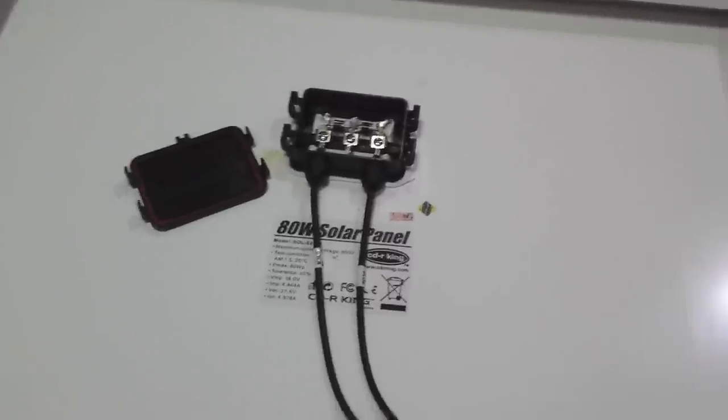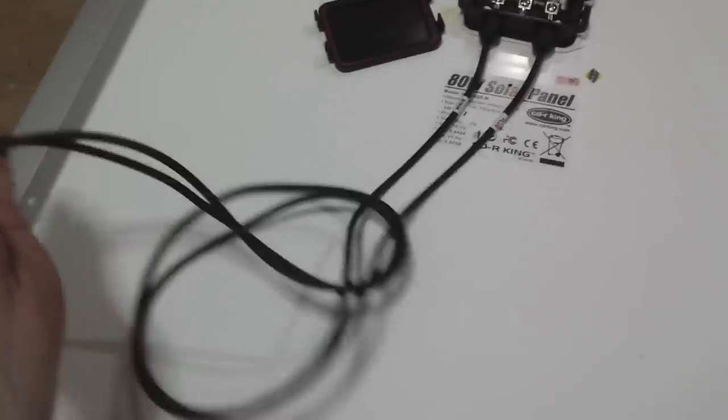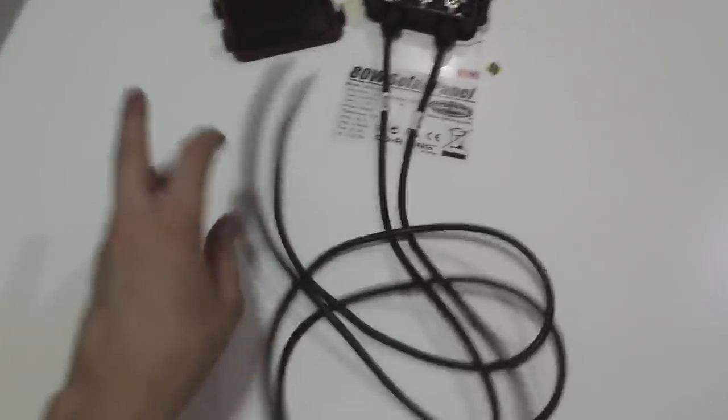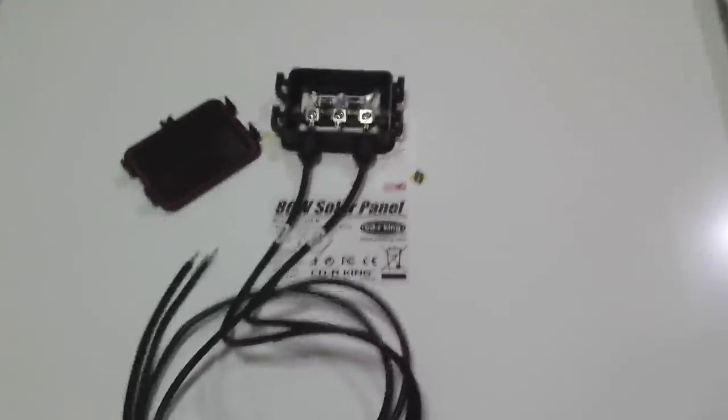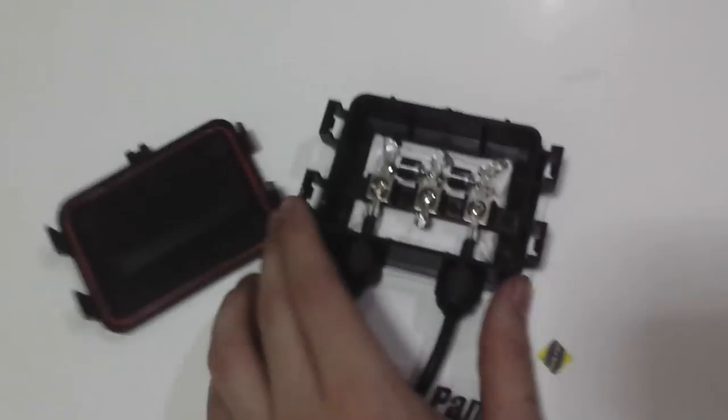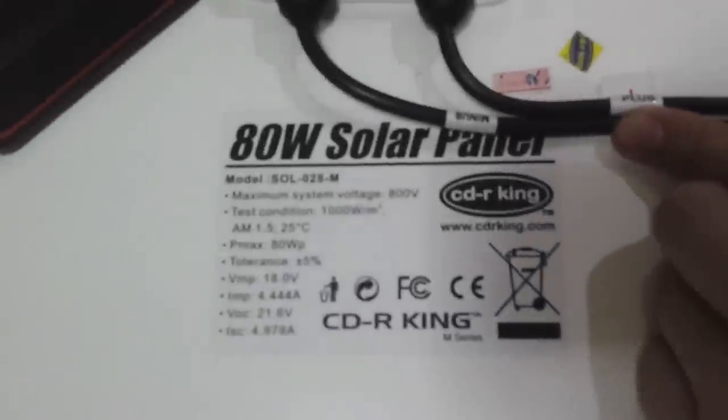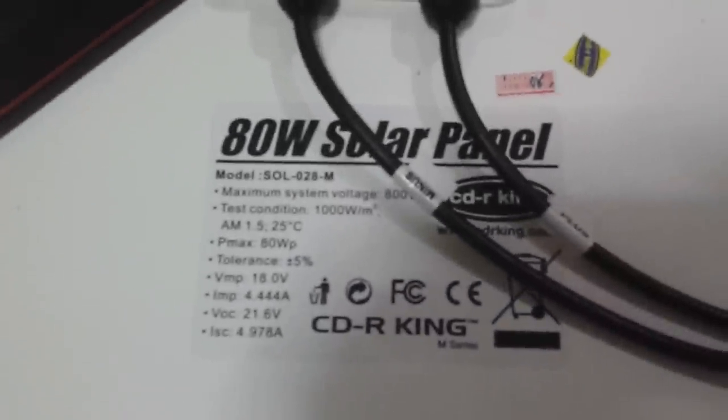So here's the 80 watt panel. You'll notice that this one already comes with some wires connected, which is quite nice. They're not very long, but definitely good enough, especially if you're going to put a few of these, you know, connect a few of these together. It's long enough to join them. Inside you've got your blocking diodes again. I'll show you the information. Just pause the video if you want to read.